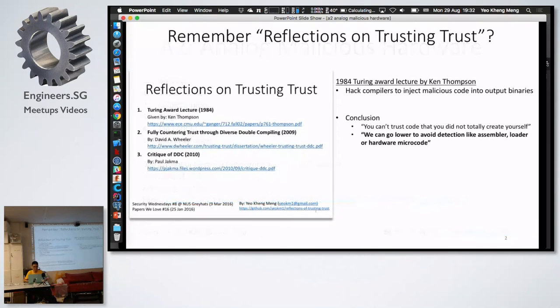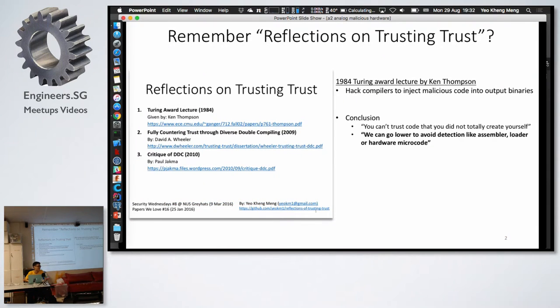Okay, so before I begin, you guys remember this paper a lot. I gave this talk earlier this year at Papers with Love or Soul, so it's a reflection of trusting trust. This paper, if you have not read, it's by Ken Thompson. He gave a demo on how you can actually hack compilers to inject malicious code. The key thing is in his conclusion: you can't trust code that you did not create yourself. The second part says we can go lower to avoid detection like exemplar, loader, or hardware microcode, which is similar to what this paper is trying to do.